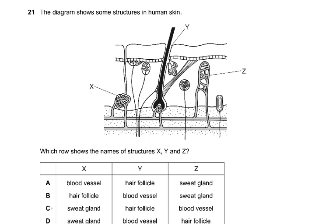Just a quick revision of the skin: there is the hair follicle, and there are the blood vessels. Now, in another MCQ, they could have pointed to the blood vessels as X, but they're actually pointing to X which is the sweat gland. So this is another part of the sweat gland — if I had to color it, this is the sweat gland.